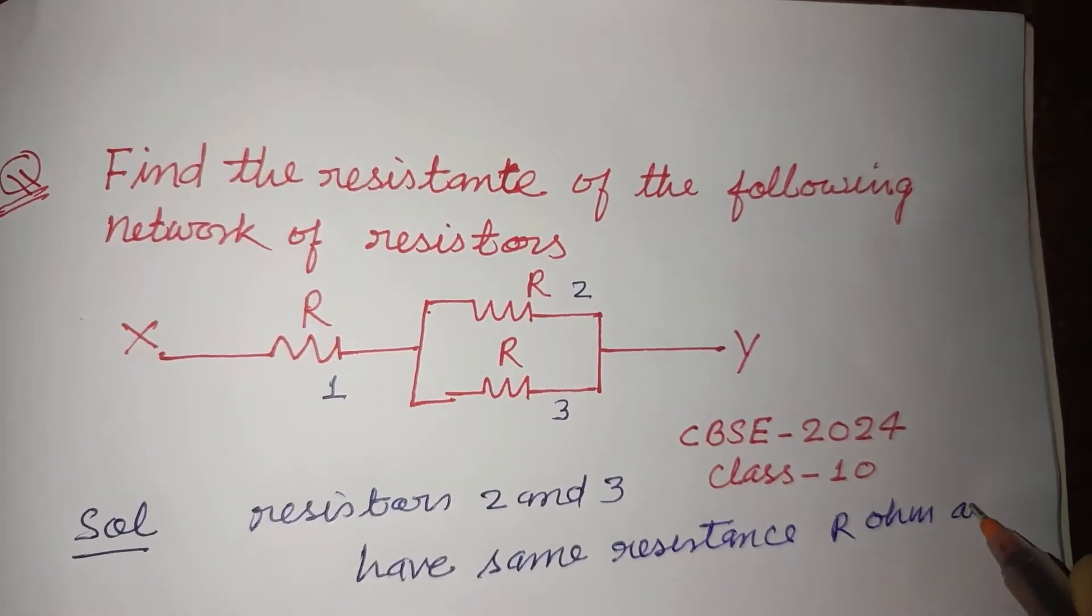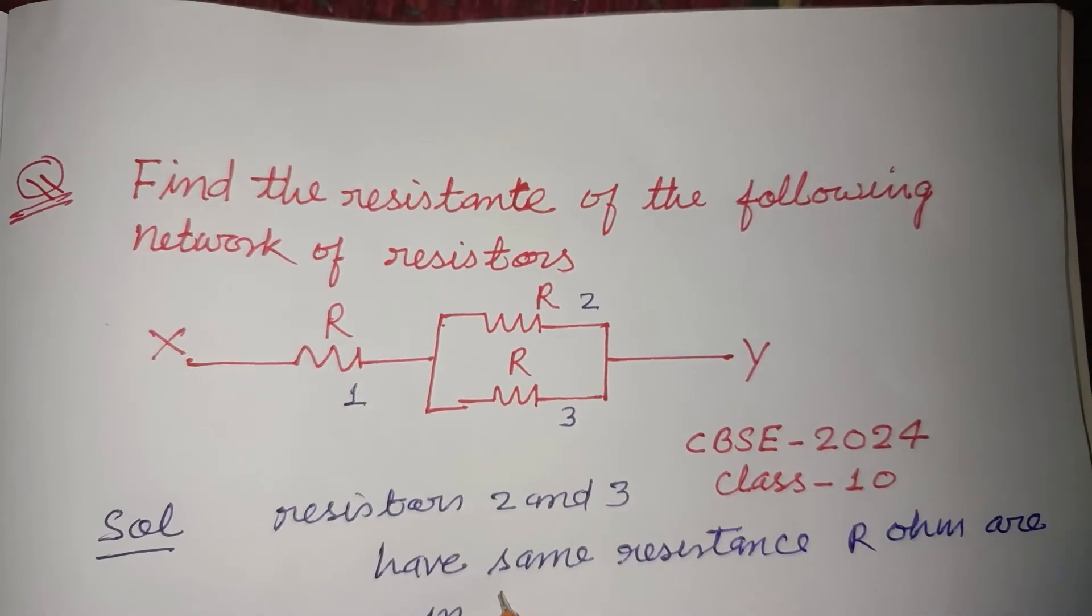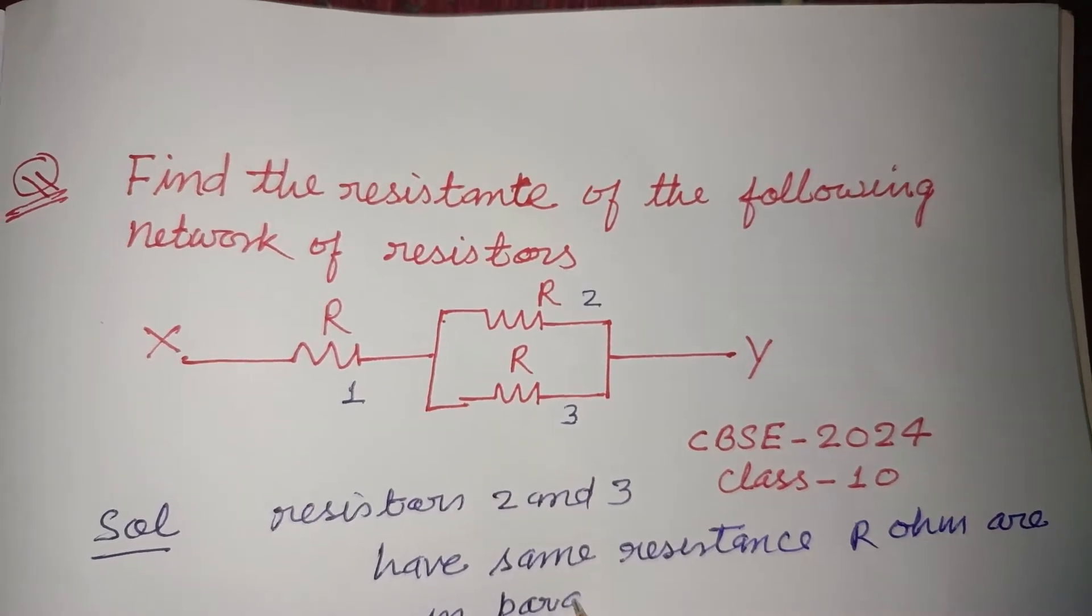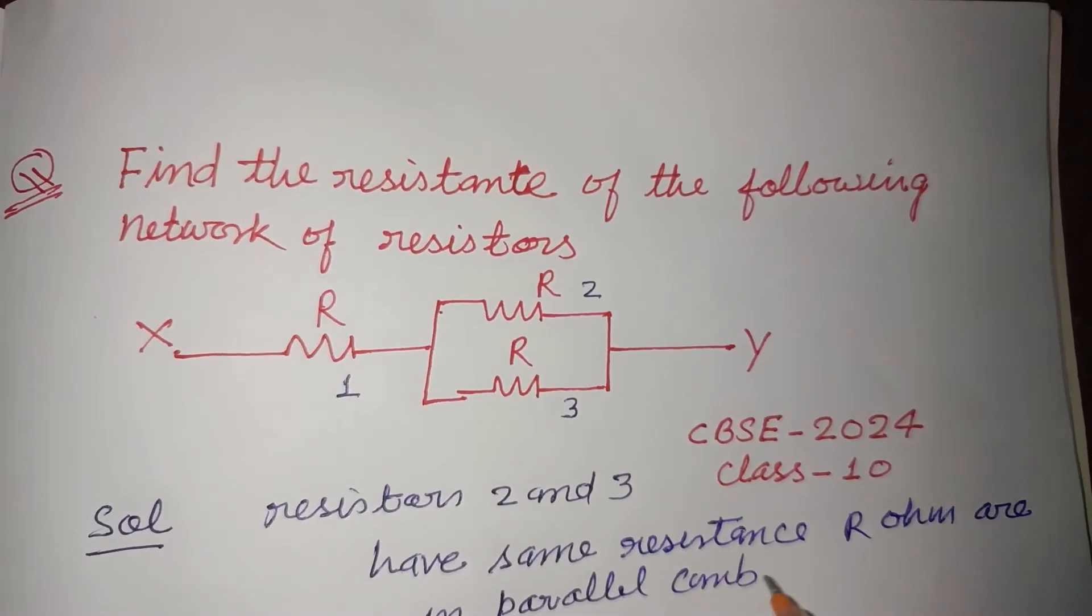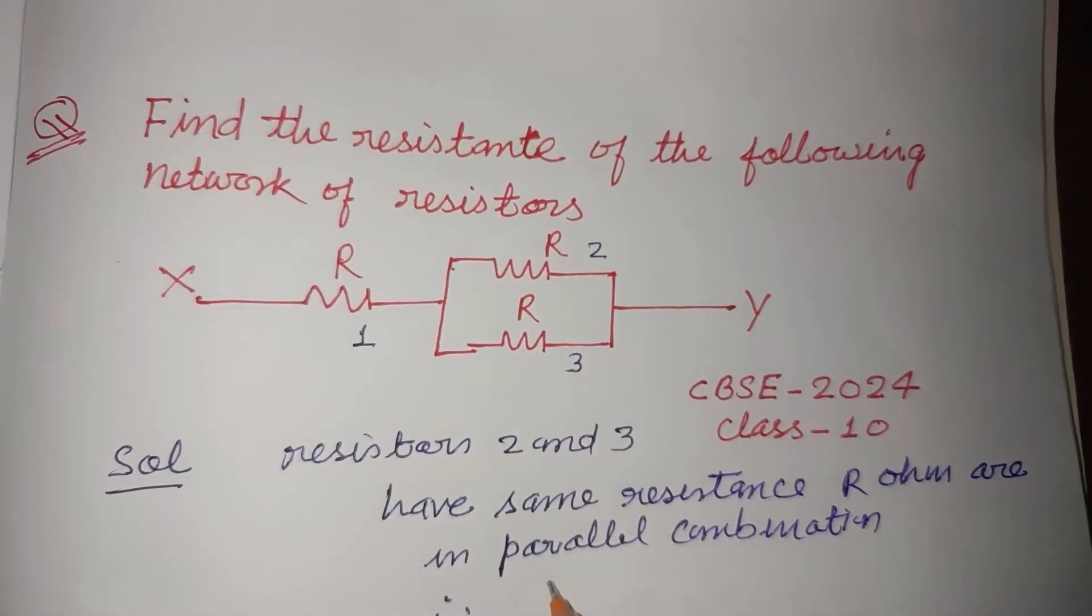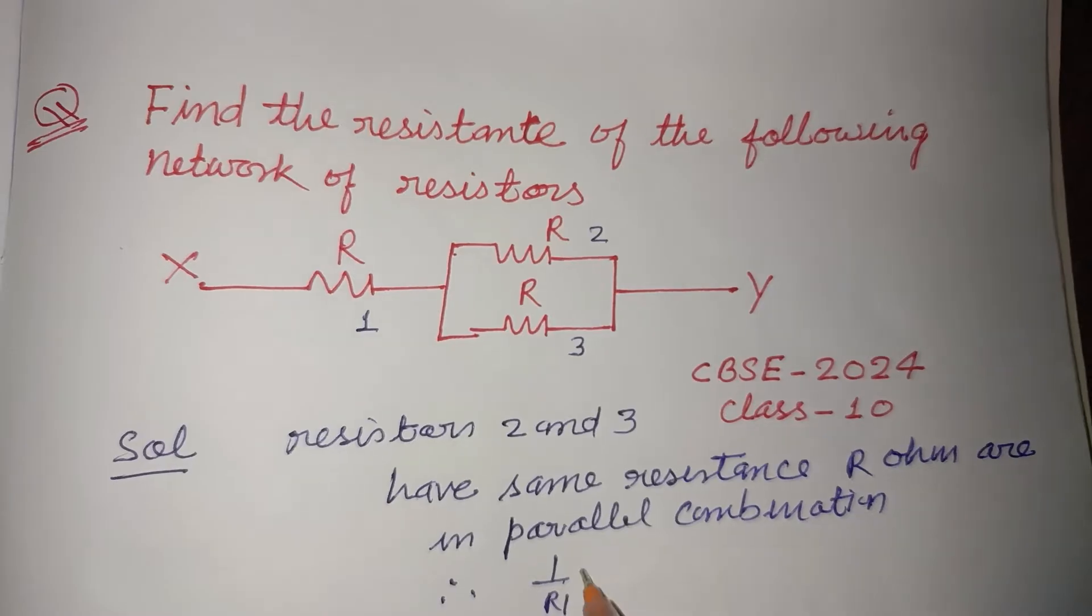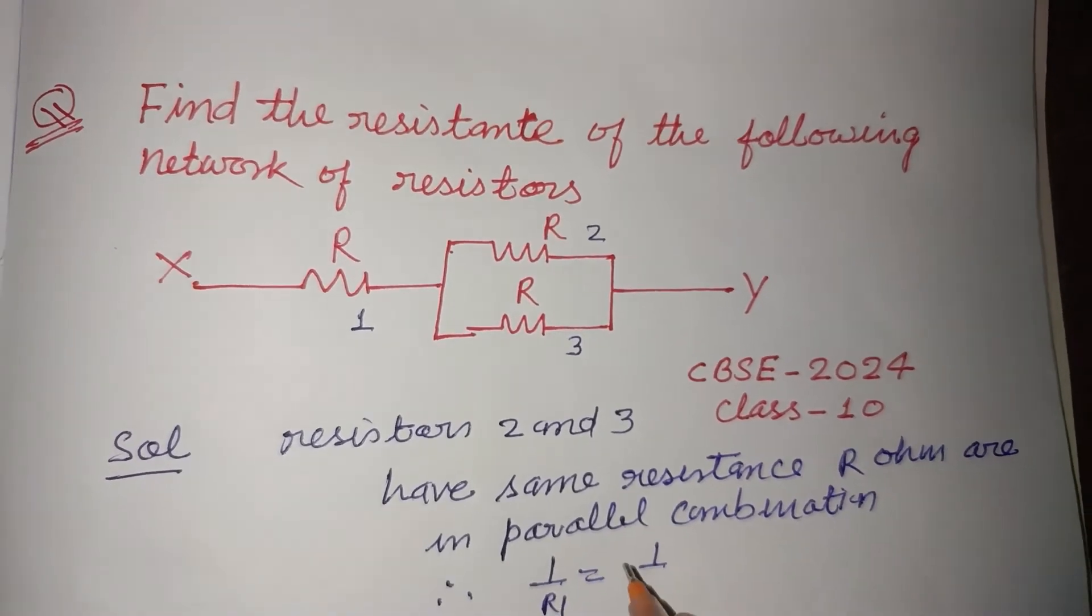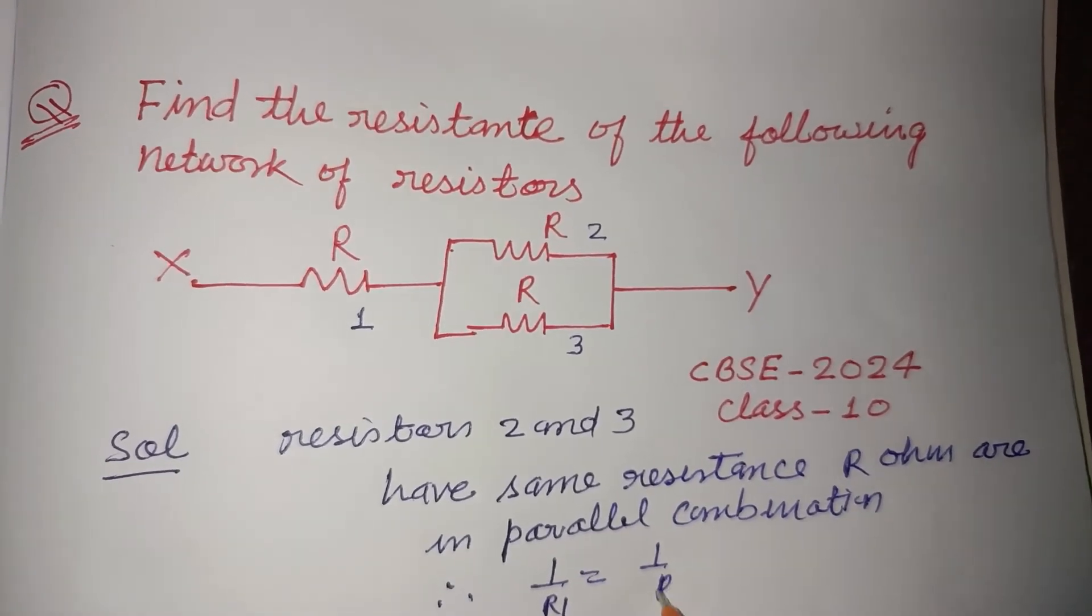R in parallel combination. So their equivalent resistance is R1. This is one upon R2 plus one upon R3, so this is one